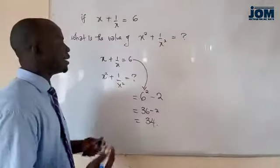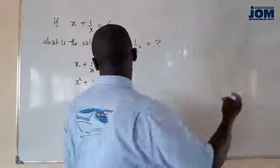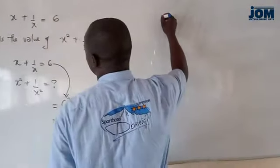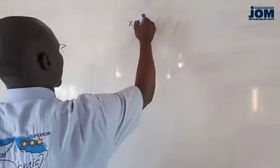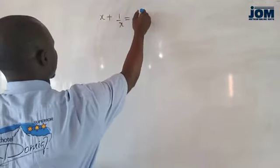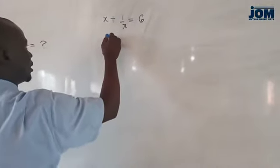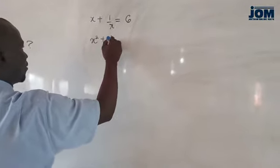Very simple. Let us use the other method and see. If you have x plus 1 over x is equal to 6, and we need to find x squared plus 1 over x squared.